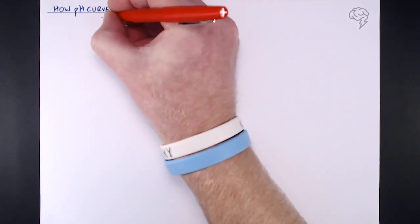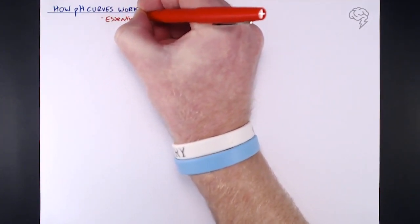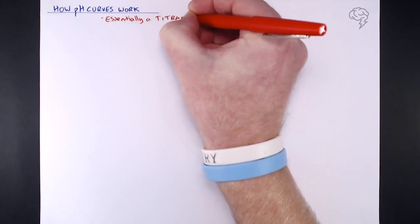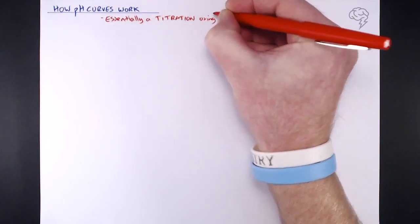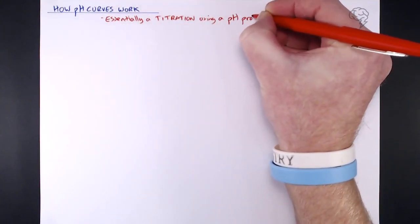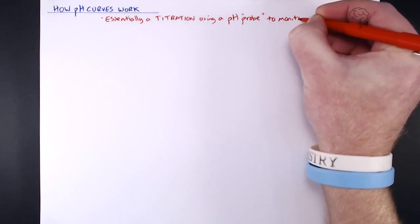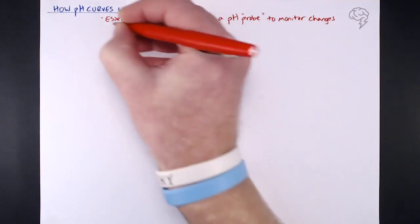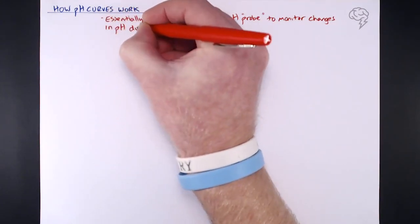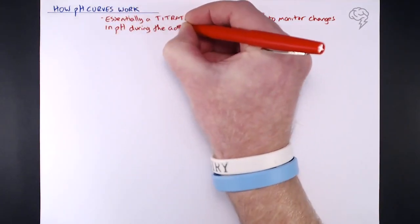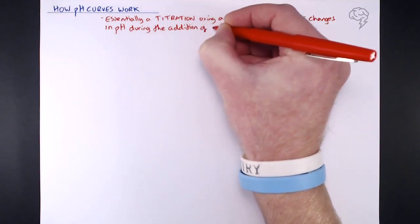It's just another titration but this time we're using a pH probe, a digital probe that monitors the pH instead of an indicator. So the pH probe monitors changes in pH during the addition of a base or alkali to an acid. I'm going to be talking about bases here, but we're dealing with alkalis because they are soluble bases.